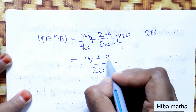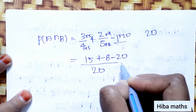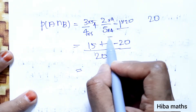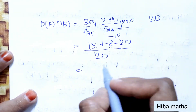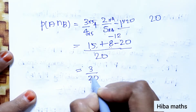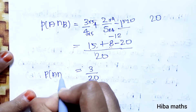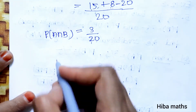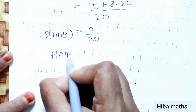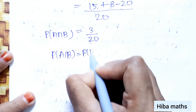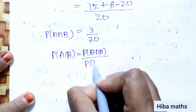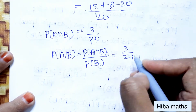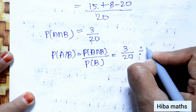Calculating: 3/4 + 2/5 = 15/20 + 8/20 = 23/20, minus 20/20 gives 3/20. Therefore P(A∩B) = 3/20. Now P(A|B) = P(A∩B) / P(B) = (3/20) / (2/5).